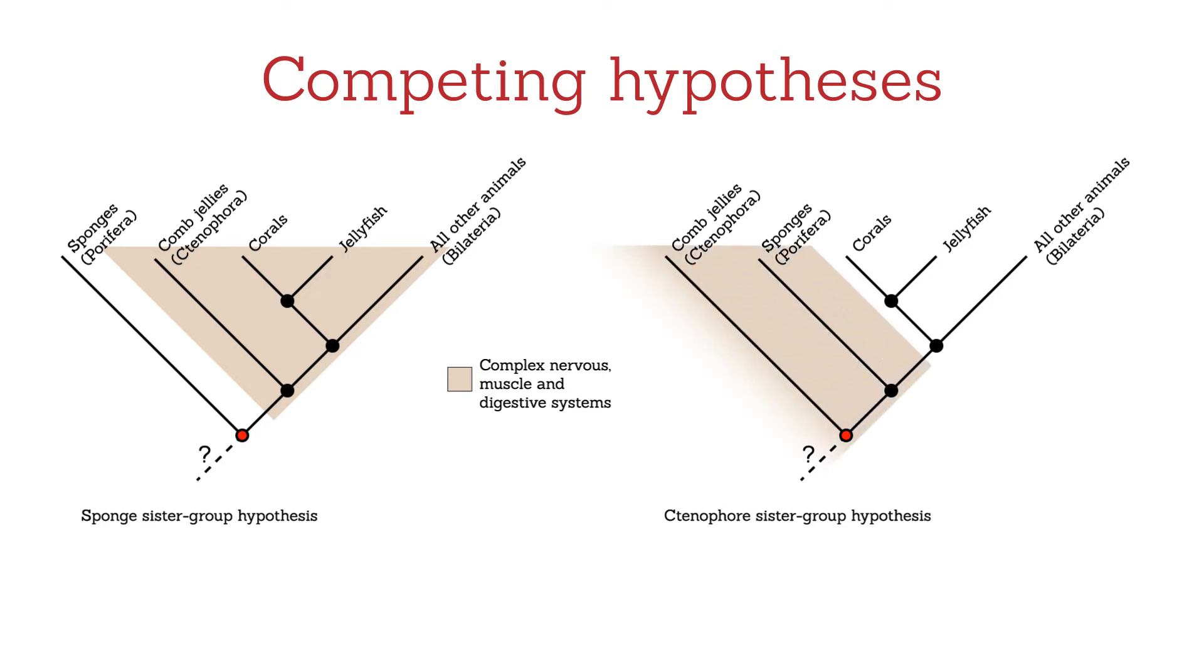If this ancestor was ctenophore-like, then we don't know where in the tree this complexity arose. All we can say is that early animals were already quite complex, and that sponges must have undergone an evolutionary reversal to lose a great deal of their inherited complexity.